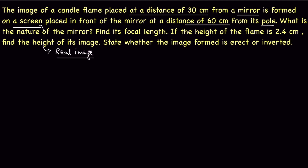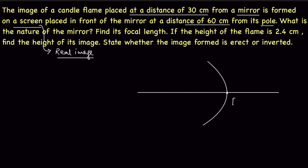Between a concave mirror and a convex mirror, we know that a concave mirror can only form a real image. So this is a concave mirror. Here is the pole and this is the focus. The object is positioned here at a distance of 30 centimeters, and the screen is present at a distance of 60 centimeters from the pole.